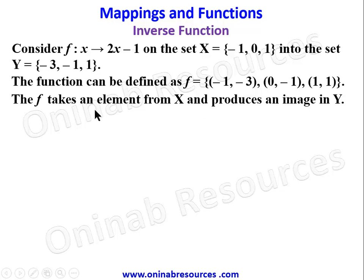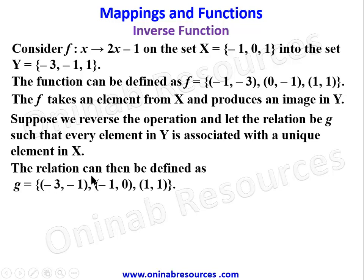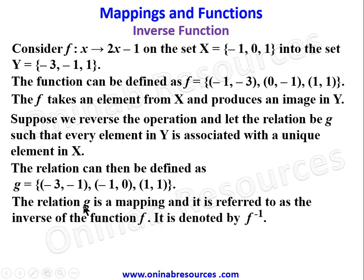Now suppose we reverse the operation and let the relation be g such that every element in y is associated with a unique element in x. So -3 is associated with -1, the element -1 is associated with 0, and 1 is associated with 1. The relation can then be defined as {(-3, -1), (-1, 0), (1, 1)}.